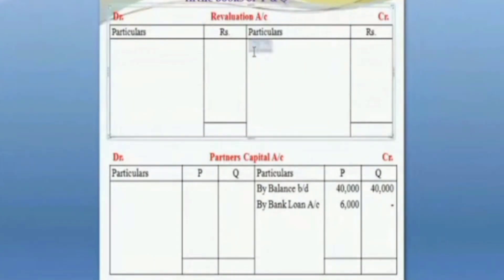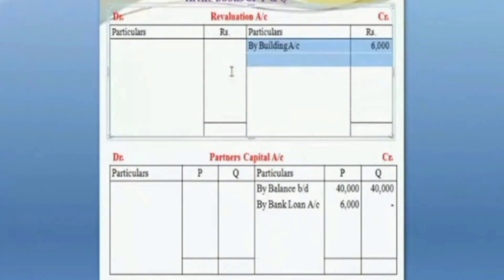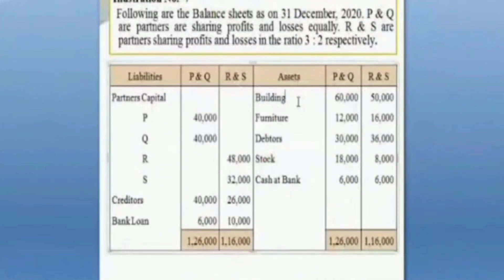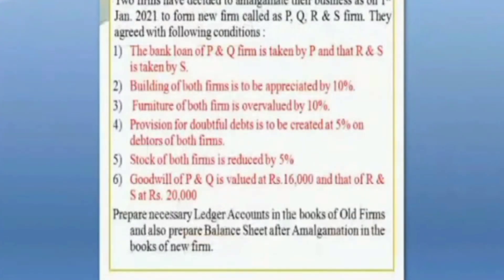For the building account: the building of P&Q is 60,000 multiplied by 10%, giving an appreciation of 6,000. Similarly, the building of R&S is 50,000 multiplied by 10%, giving 5,000. So total building appreciation is recorded. The furniture of both firms is overvalued by 10%.